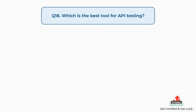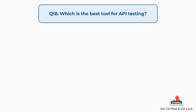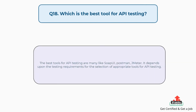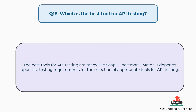Question number eighteen: Which is the best tool for API testing? The best tools for API testing are many, like SOAP UI, Postman, and JMeter. It depends upon the testing requirements for the selection of appropriate tools for API testing.